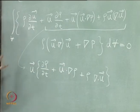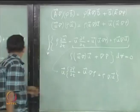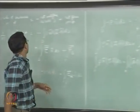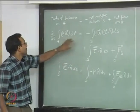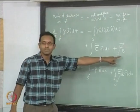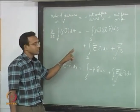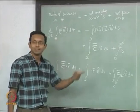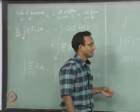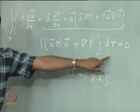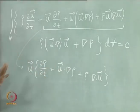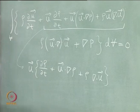We said the integral should be valid for any small volume dV, so ideally whatever is inside the flower bracket inside the integral must be equal to zero, giving us the differential form. Remember the integral form which we started with and the differential form — we will use both of them depending on the situation, whichever is convenient.